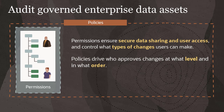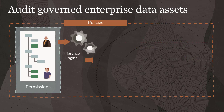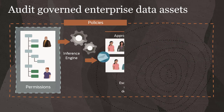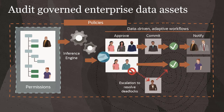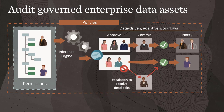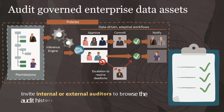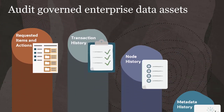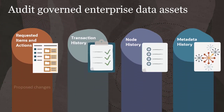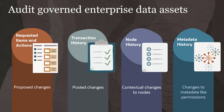Policies drive who approves changes at what level and in what order. Because every request is unique, the inference engine creates context-sensitive, data-driven, adaptive workflows based on which policies the request triggers. Every workflow action is captured in a rich audit history, which you can invite internal or external auditors to browse. The details the system captures along the way make it easy to audit proposed changes, posted changes, contextual changes to individual nodes, and changes to metadata like permissions.